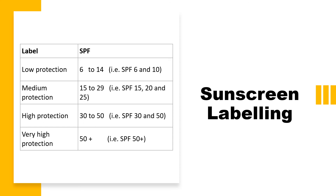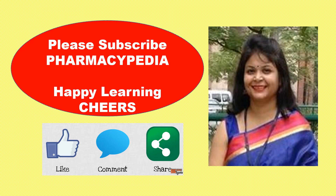In the next video, all sunscreen agents will be discussed — those in the UVB range, UVA range, and their combinations. The recommendation is to always use SPF 30 for UVB protection along with 4 to 5 star UVA protection. Thank you so much for watching — please like, share, and subscribe to Pharmacypedia. Happy learning.